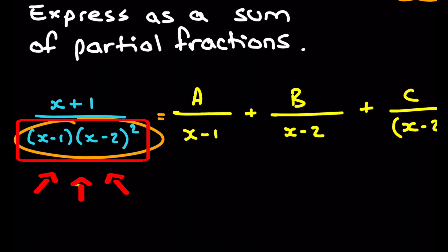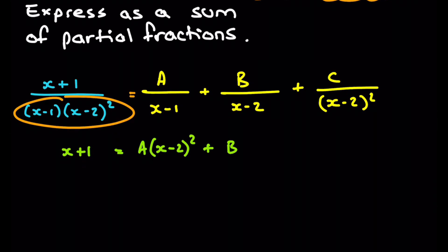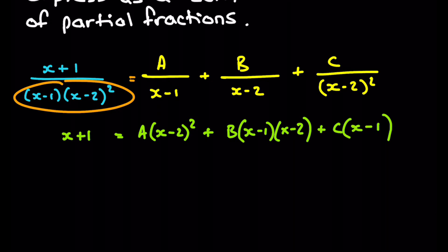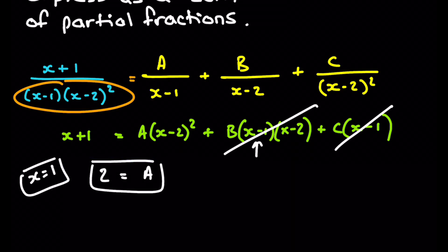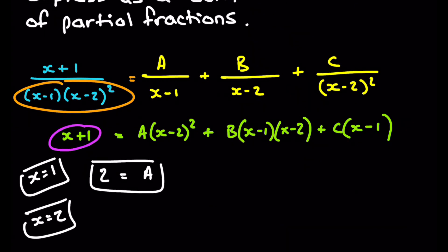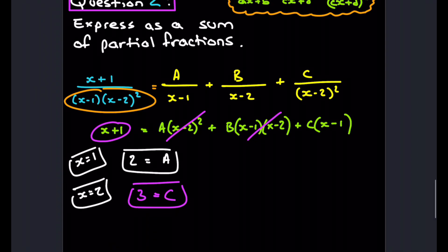Multiplying through by the denominator gives x + 1 = A(x − 2)² + B(x − 1)(x − 2) + C(x − 1). Let x = 1: the B and C terms go to zero, giving 2 = A(1 − 2)² = A(1), so A = 2. Now let x = 2: the A and B terms go to zero, leaving 3 = C(2 − 1), so C = 3.